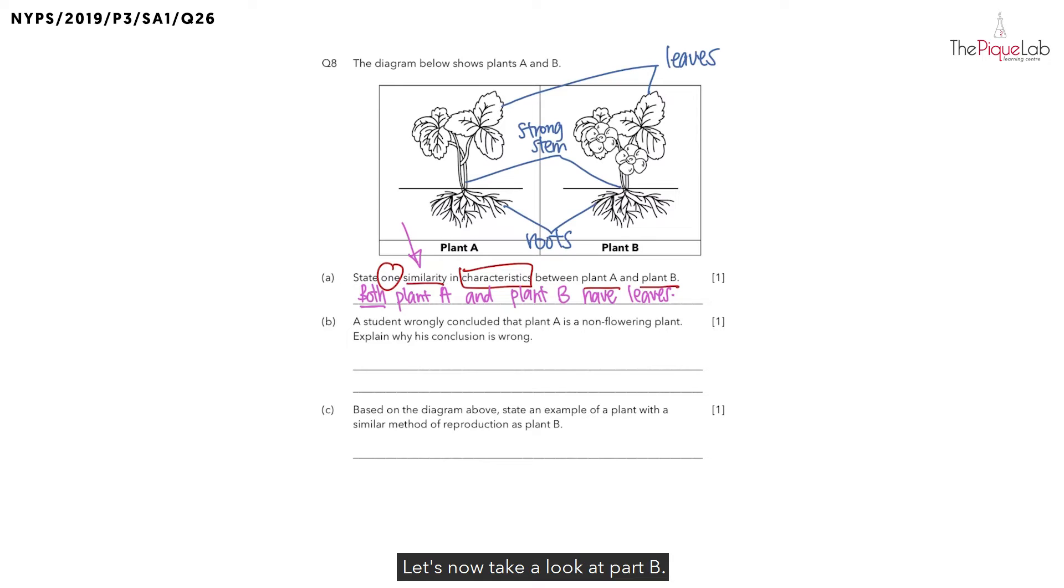Let's now take a look at part B. Part B mentioned that a student wrongly concluded that plant A is a non-flowering plant. Explain why his conclusion is wrong. If you examine the diagram of plant A above, you would realize that plant A has no flowers. And many students would then conclude that since this plant has no flowers, this is a non-flowering plant. But is this really 100% true?